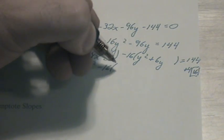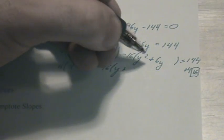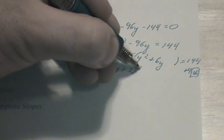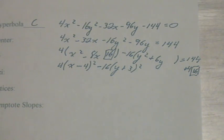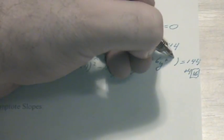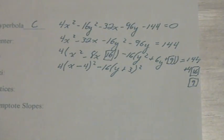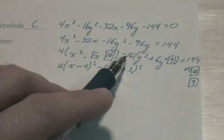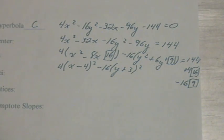Minus 16 times y plus 3 squared, since half of 6 is 3. Square the 3, and in this box we're going to place a 9. I'll put another box here where I'll also write the 9. You'll note that this box is being multiplied by a negative 16, so this box here will also be multiplied by negative 16.